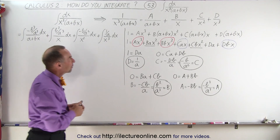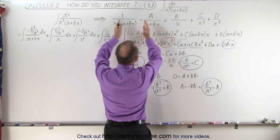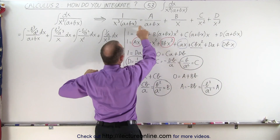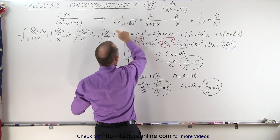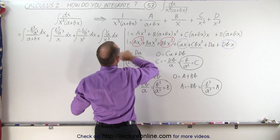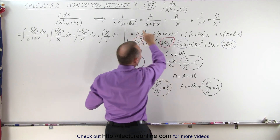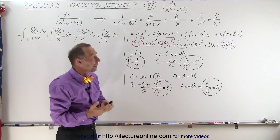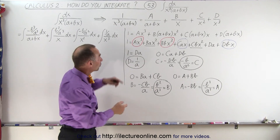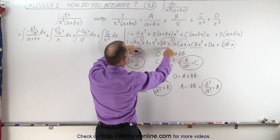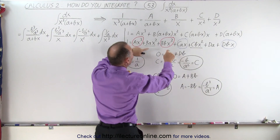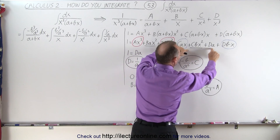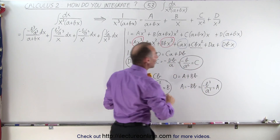What we do here is we're going to multiply the left side and the right side of this equation by the lowest common denominator. When we do that, we get one on the left side and we get all these terms on the right side. When we multiply them out, we end up with two terms on the right side with an x cubed, two terms with an x squared, two terms with an x to the first power, and one constant term.